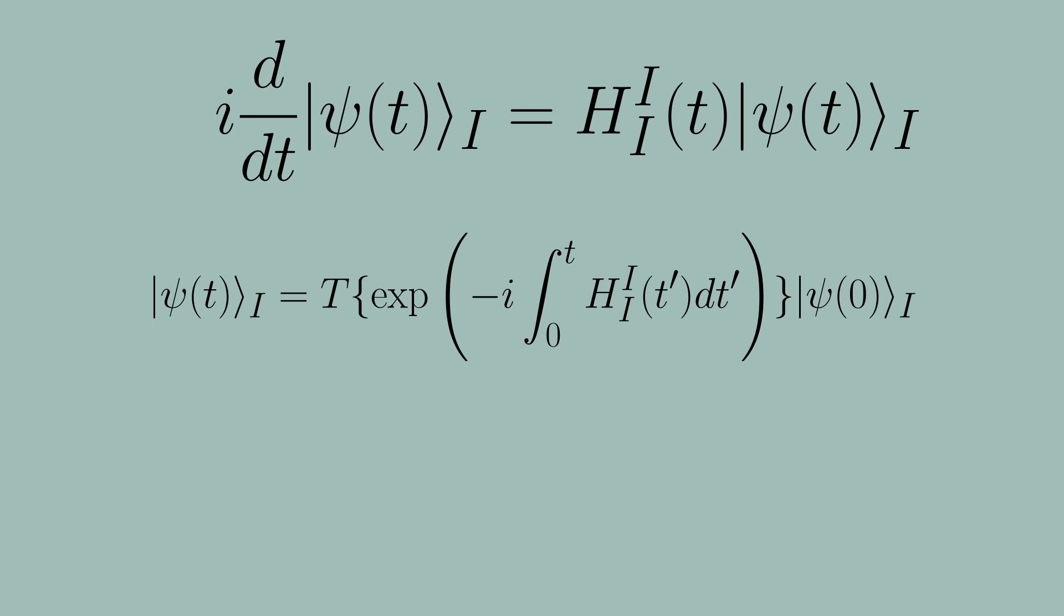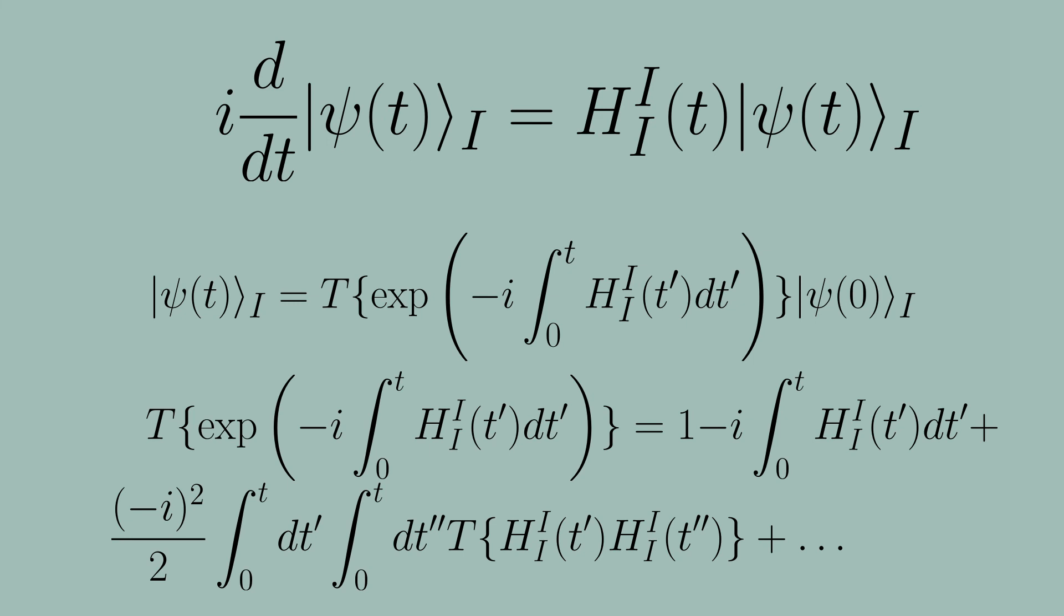Sometimes, and certainly where we will focus on this picture on this channel, the interacting Hamiltonian will be small, like in linear response theory, so it's useful to expand it. Freeman-Dyson did this as the following equation. Take note specifically of the linear term. We will use this in a future video.